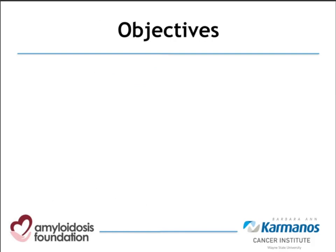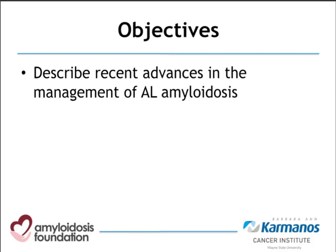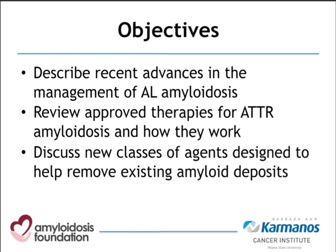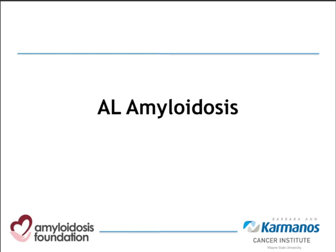Today, I will first describe recent advances in the management of AL or light chain amyloidosis. Then we'll move on to a review of therapy, including approved therapies for ATTR or transthyretin amyloidosis and how those therapies work. Then we'll discuss new classes of agents designed to help remove existing amyloidosis deposits. So let's start with AL or light chain amyloidosis.